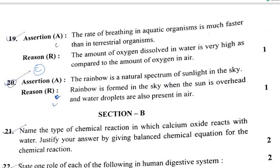Question 20 (Assertion-Reason): A rainbow is a natural spectrum of sunlight in the sky. The rainbow is formed when the sun is overhead and water droplets are also present. The assertion is true and the reason correctly explains it, so option A is the answer for question 20.